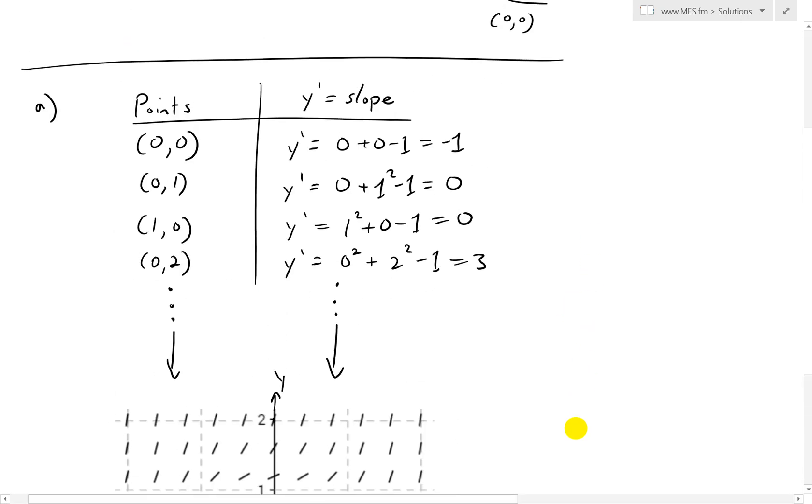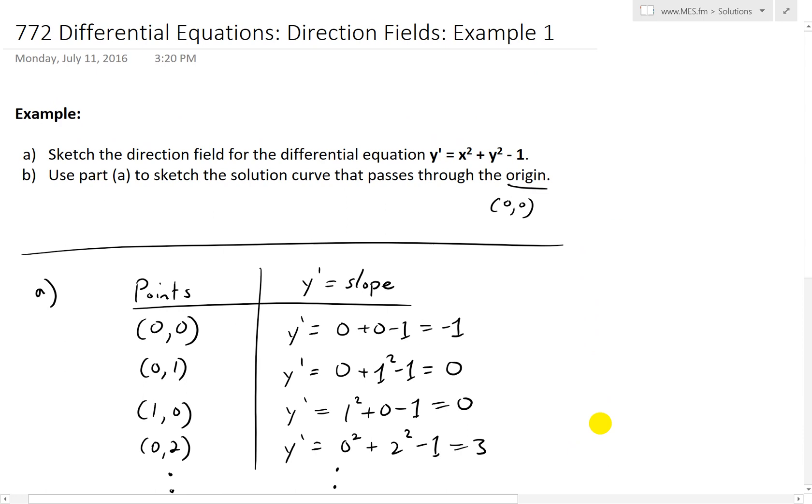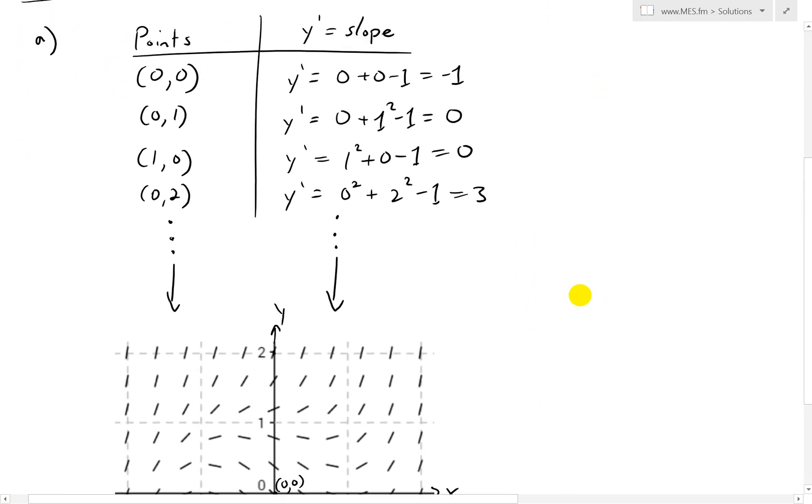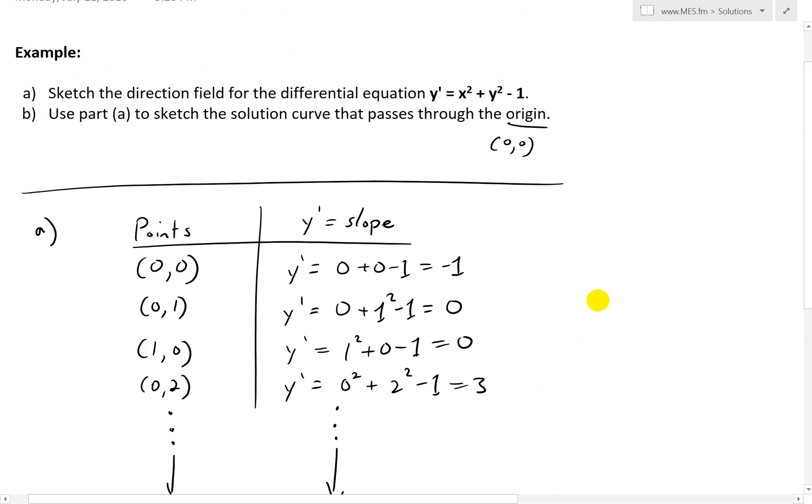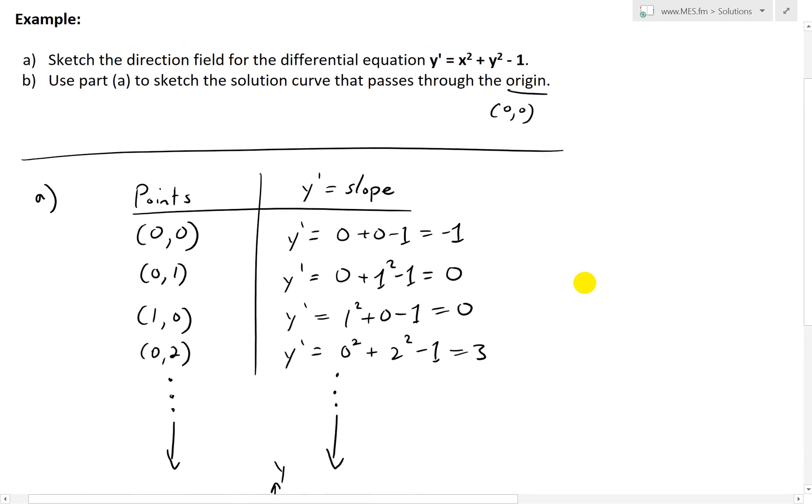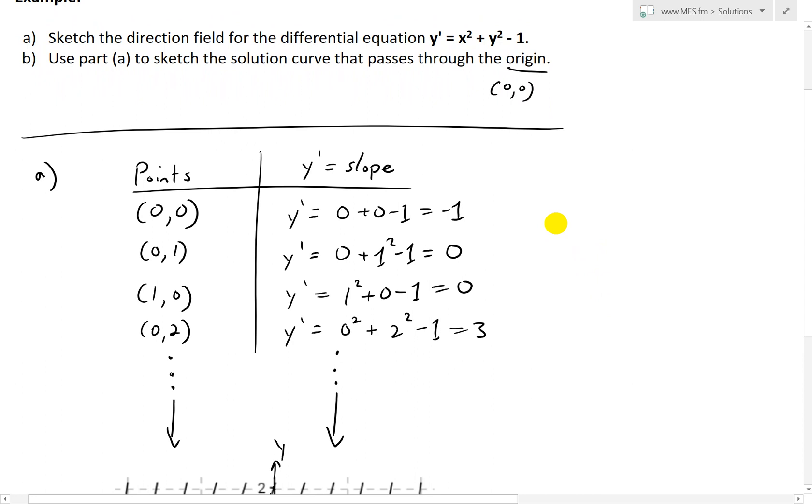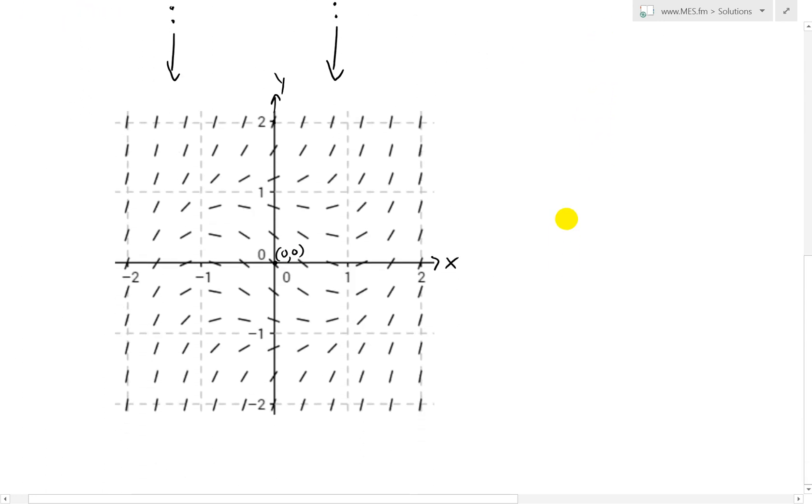So now the next step is part B, because this is our direction field generated. You can do this manually. I just got that random calculator online. So part B states: use part A to sketch a solution curve that passes through the origin.